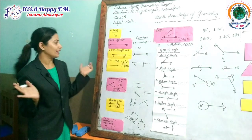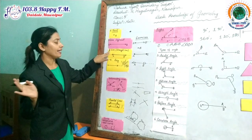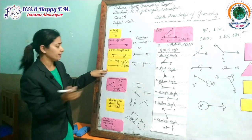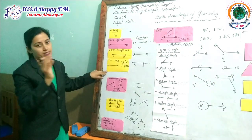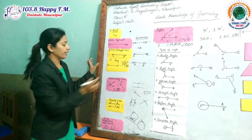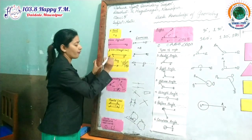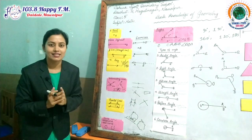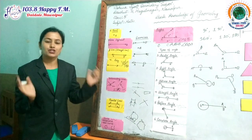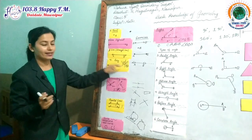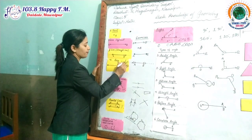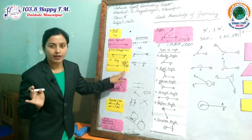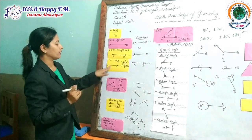My dear students, I think you are very clear about line segment and line. The next topic is ray. Ray means the origin or beginning point is fixed, but the ending point is never fixed — it can be extended. It is called a ray. A very clear example of a ray is sun rays: the sun is the fixed point, and from the sun different rays come out and extend. So it is a ray.